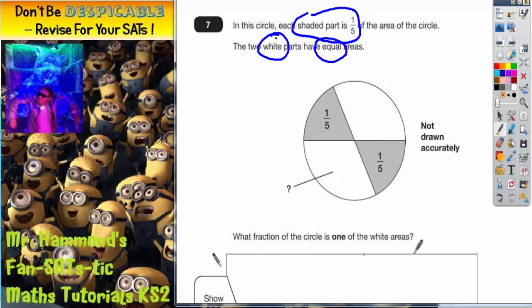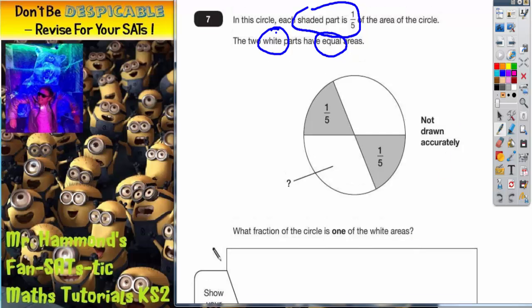What fraction of the circle is one of the white areas? Well, the easiest way to do this is to actually use percentages.